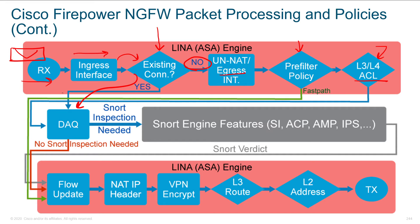Once we get past those filters and work through our layer three, layer four ACL — very low-cost filtering — the things that made it through come into our DAQ. Here we determine: does this need a deeper layer of analysis? If so, we punt it to the Snort engine. If no inspection is needed, we go ahead and forward the packet out of the firewall. We don't want to hold onto it long, so we make all these decisions as fast as we can, cache the decision, update our flow data and counters, add the header, encrypt on egress if needed, leverage the layer three route, then layer two — generating that new layer two header from the ASA to the next hop.